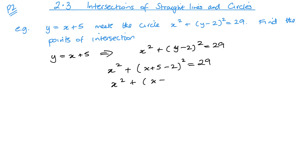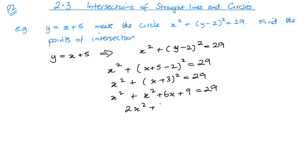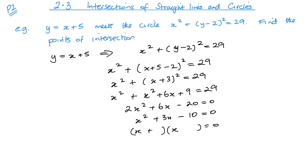Expanding x² + (x + 3)²: squaring the bracket gives x². The double product is 2 × x × 3 = 6x, and squaring the last gives 9. So we get 2x² + 6x + 9 − 29 = 0, which gives 2x² + 6x − 20 = 0. All even numbers, so divide by 2 to get x² + 3x − 10 = 0. This factorises nicely: a 2 and a 5 make 10, and 5 − 2 = 3, giving (x + 5)(x − 2) = 0. So x = −5 or x = 2.